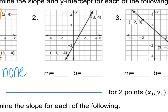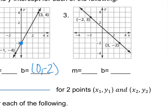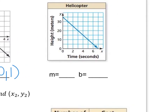For problem 2, the y-intercept is where the graph crosses the y-axis, which gives the ordered pair (0, -2). In problem 3, the y-intercept is at 1, so the ordered pair is (0, 1). For the last graph, since 0 and 10 are labeled, the midpoint must be 5, so counting up by 5s gives 0, 5, 10, 15, 20, 25, 30, 35 — the y-intercept is the ordered pair (0, 35).